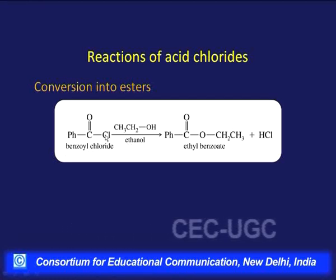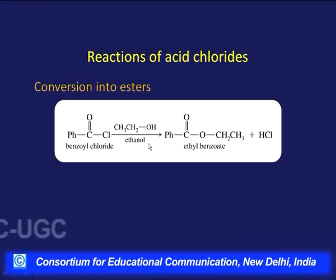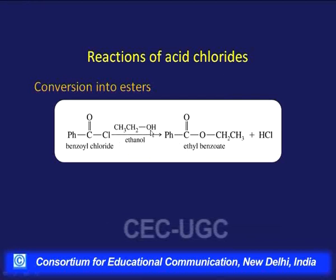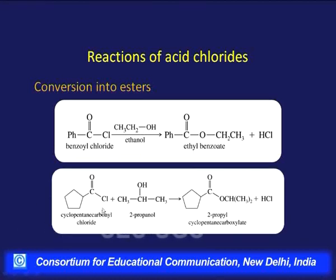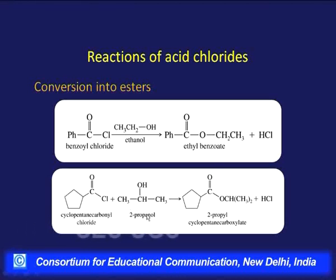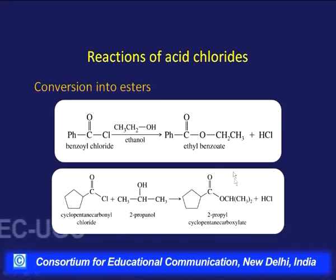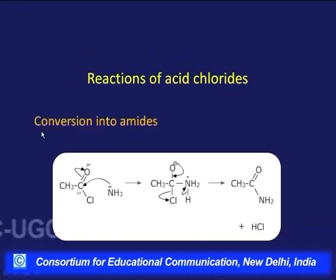Esters can also be obtained when an aromatic acid chloride reacts with an alcohol — for example, ethanol reacts with benzoyl chloride to give ethyl benzoate, with loss of HCl. Even cyclic acid chlorides like cyclopentane carbonyl chloride react with alcohols such as 2-propanol to give 2-propyl cyclopentane carboxylate. So all sorts of esters can be formed from different acid chlorides and alcohols or phenols.